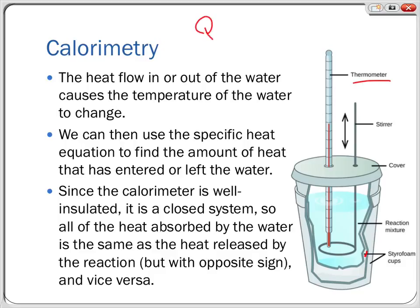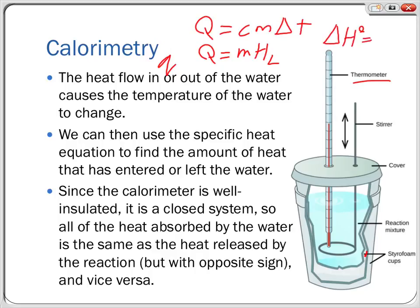This heat flow causes the water's temperature to change. By measuring the temperature with the thermometer and using the specific heat equation Q = CmΔT, we can find the amount of heat that entered or left the water. If there's a phase change we'd use Q = mHL for latent heat, but normally it's Q = CmΔT. Once we have Q in kilojoules, and we know the number of moles of reaction N, we can find ΔH° = Q/N in kilojoules per mole.